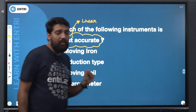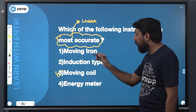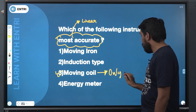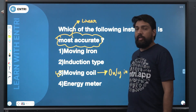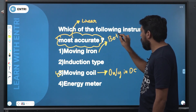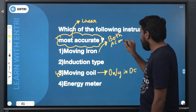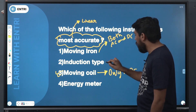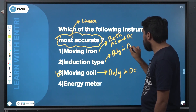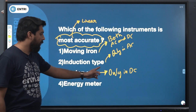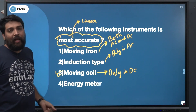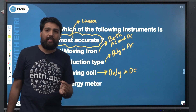If you are using a moving coil instrument, it will work only in DC. Moving coil instruments work only in DC. Moving iron instruments work on both AC and DC. Induction type instruments work only in AC — that is the key distinction.